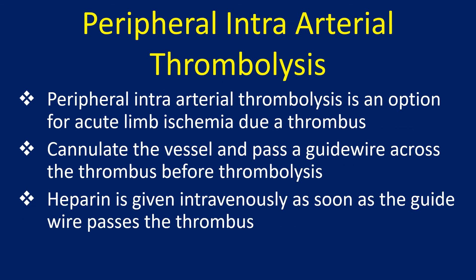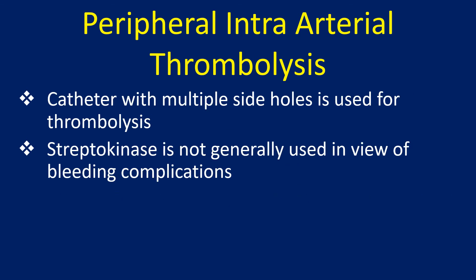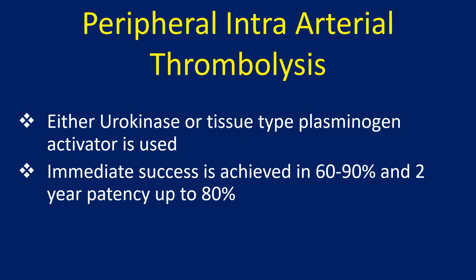Peripheral intra-arterial thrombolysis is an option for acute limb ischemia due to a thrombus. The technique involves cannulating the vessel and passing a guide wire across the thrombus before thrombolysis. Heparin is given intravenously once the guide wire passes the thrombus. A catheter with multiple side holes is used. Streptokinase is generally not used due to bleeding complications; either urokinase or tissue-type plasminogen activator is used. Immediate success is achieved in 60–90% and 2-year patency up to 80%.